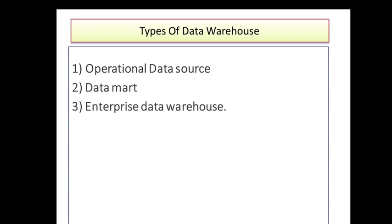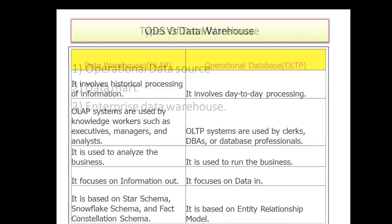Let's start with ODS. As discussed earlier, ODS is primarily what we get from OLTP — that is Online Transactional Processing. OLTP basically uses an ER (Entity Relationship) model. We'll discuss the ER model in upcoming sessions, but first let's understand how ODS and OLTP compare with the data warehouse.